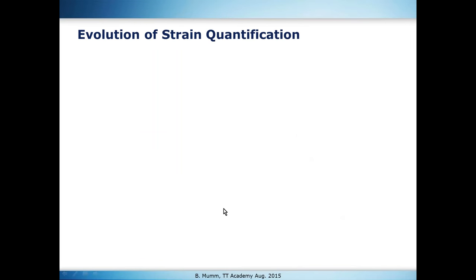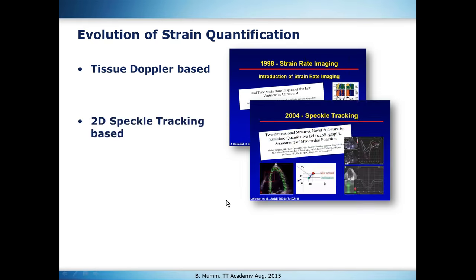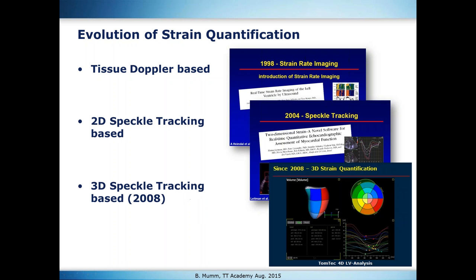Strain is quantified most of the time today based on speckle tracking. But it started last millennium — in 1998, strain-rate imaging was introduced based on tissue Doppler. However, tissue Doppler had many limitations such as angle dependency. A better technique was introduced in 2004: 2D speckle tracking. And then four years later, in 2008, we introduced the first 3D speckle tracking product and technology.